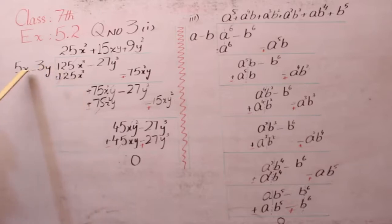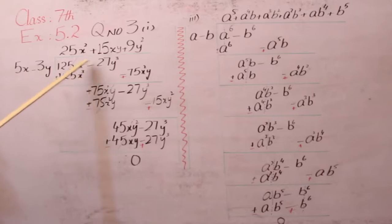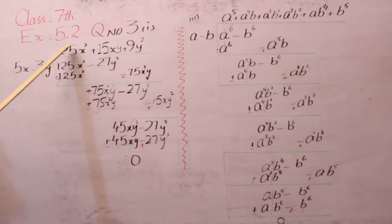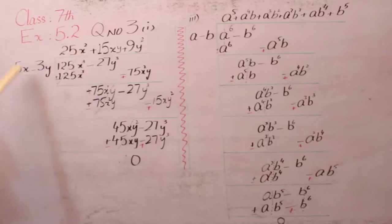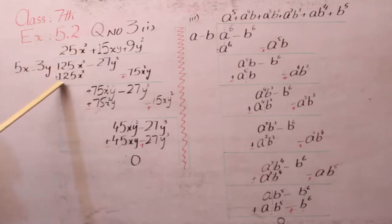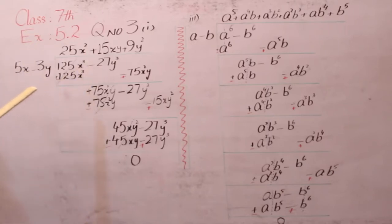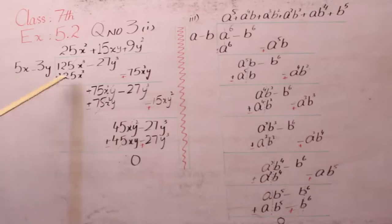यहां पर x की value 1 available है, हमें कितनी value चाहिए? 3। तो हमें required क्या होगी? 2। जो required है वो आपने ऊपर लिखते जाना है: 25x की 2। अब 25x की 2 अगर 5x से multiply करेंगे तो हमारे पास answer आएगा 125x का cube।